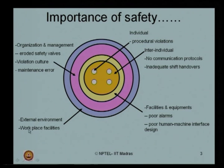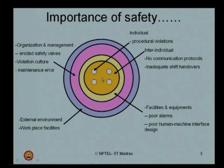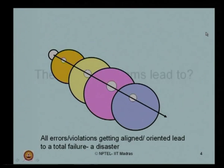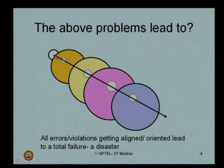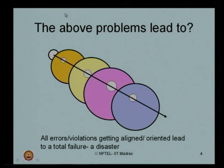This depends upon what facilities we have in the workplace. If any error or violation is created by an individual group and gets aligned with all subsequent errors done at different levels, you end up in what is called a disaster. If these errors are unfortunately aligned and oriented together, these above problems collectively lead to what we call a final disaster.